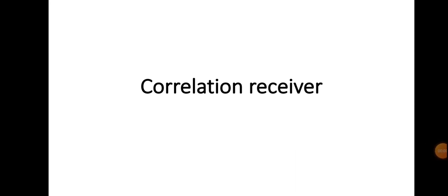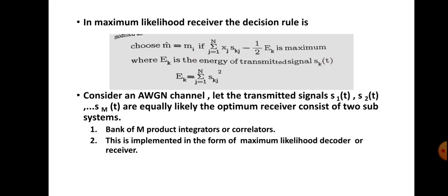In this session we will be discussing about the correlation receiver. The correlation receiver works on the principle of the maximal likelihood function. In the previous videos we have discussed about the maximal likelihood function, likelihood function, and maximal likelihood receiver. In the case of the maximal likelihood receiver the decision rule is as follows.